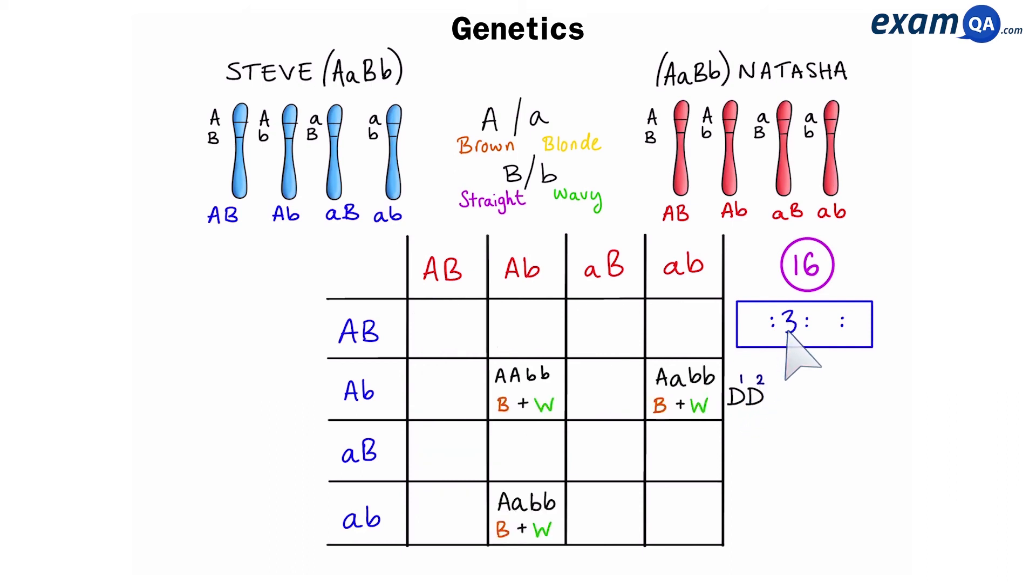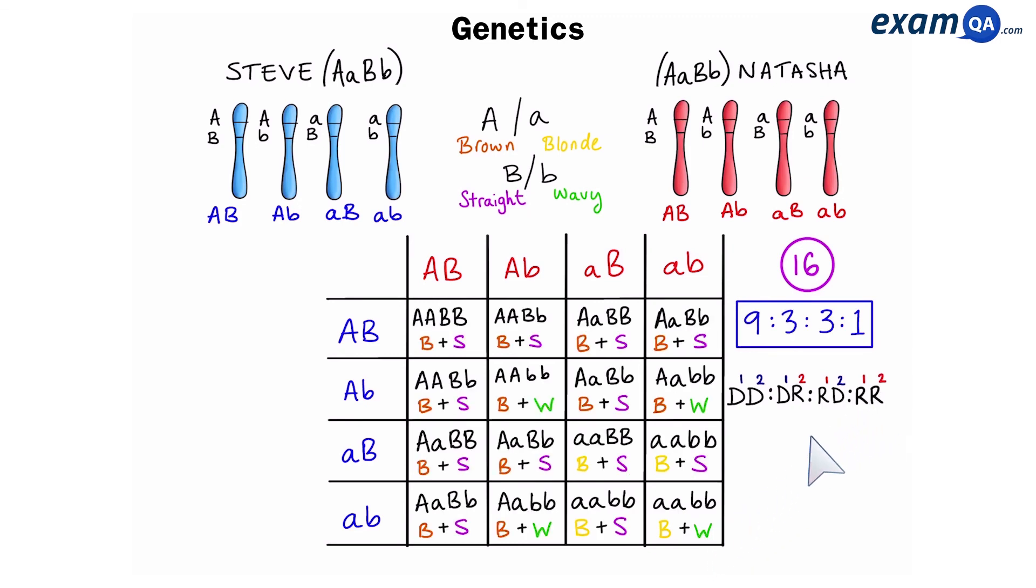3 offspring will have brown and wavy hair. That means gene 1 is dominant and gene 2 is recessive. 3 will have blonde and straight hair. This time, gene 1 is recessive and gene 2 is dominant. And finally, 1 offspring will have blonde and wavy hair. So, both genes are recessive. So, make sure you memorise the 9 to 3 to 3 to 1 ratio, which occurs in dihybrid heterozygous crosses.